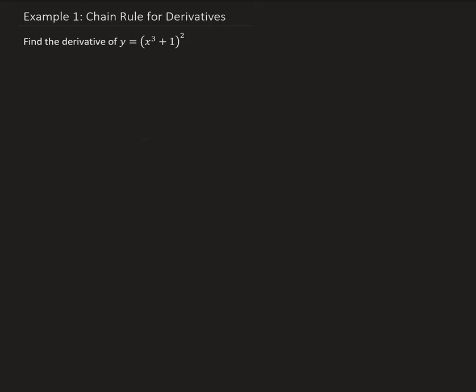To start off, we're going to let this be u. So we're going to let u be equal to x cubed plus 1. So now we have y equals u squared. We're going to take the derivative of u with respect to x, so we have du/dx equals 3x squared. And taking the derivative of y with respect to u, we get 2u.